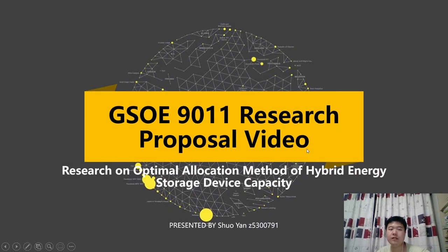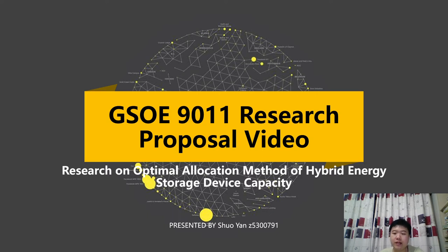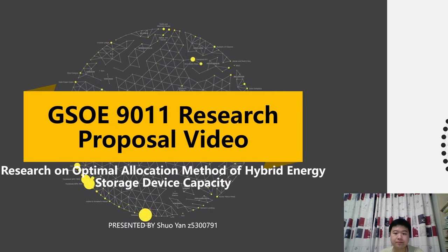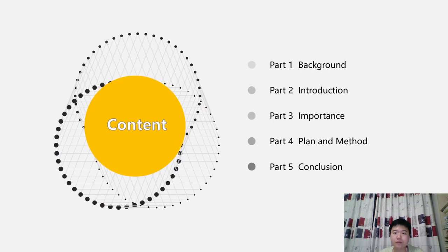My name is Shoyan. Today I will make a speech about the research on optimal allocation method of hybrid energy storage device capacity. This report is divided into five parts. Let's start with the background.